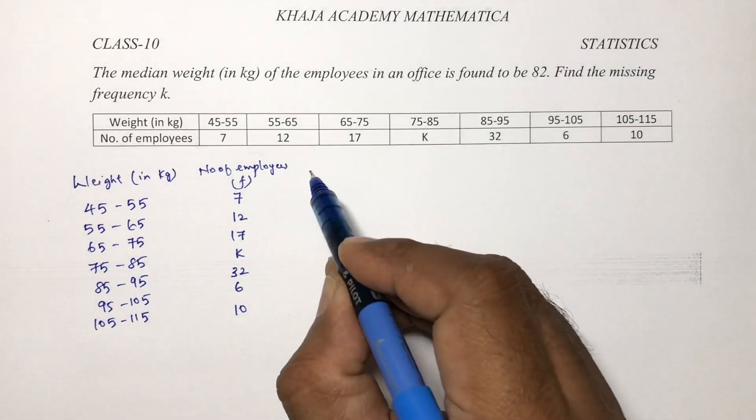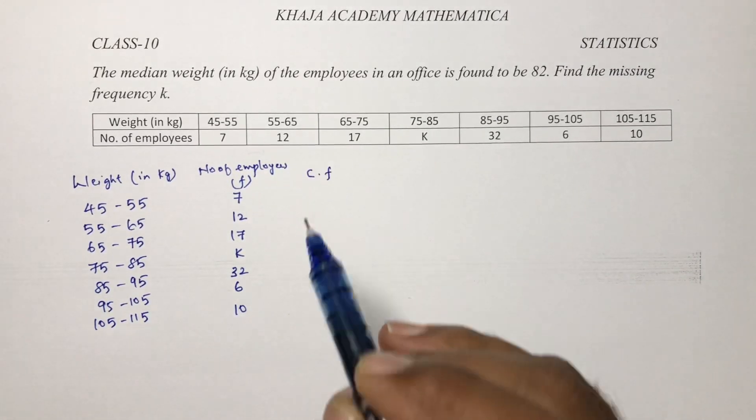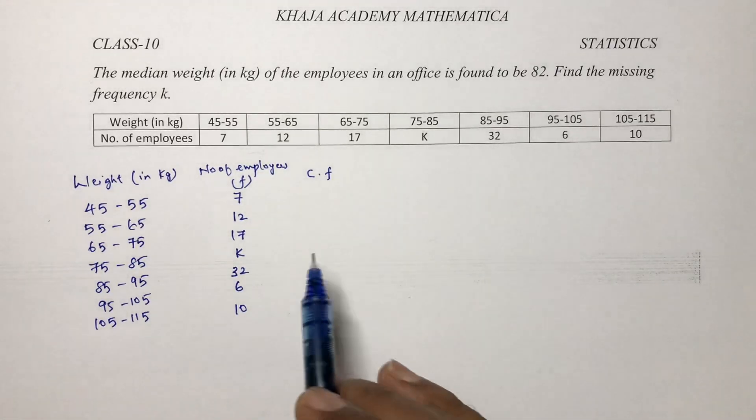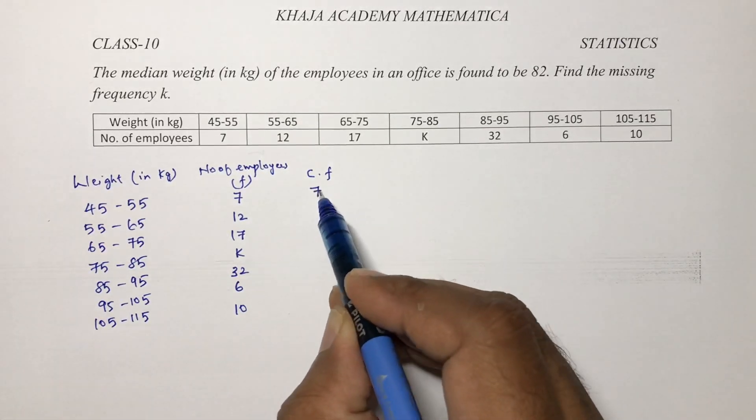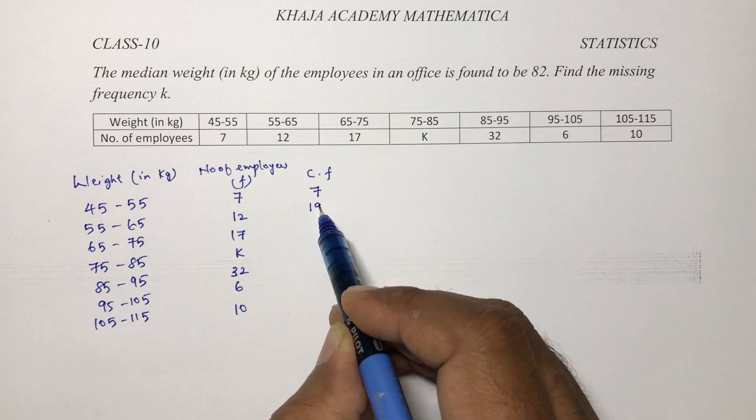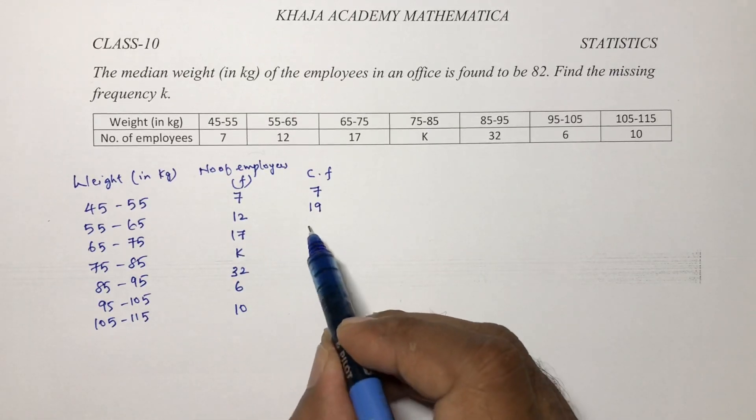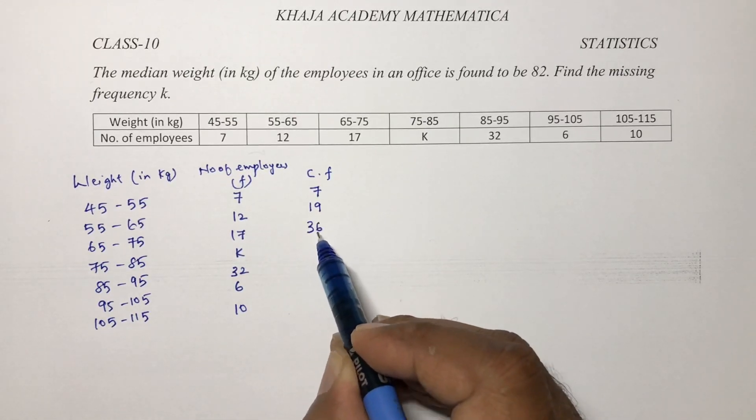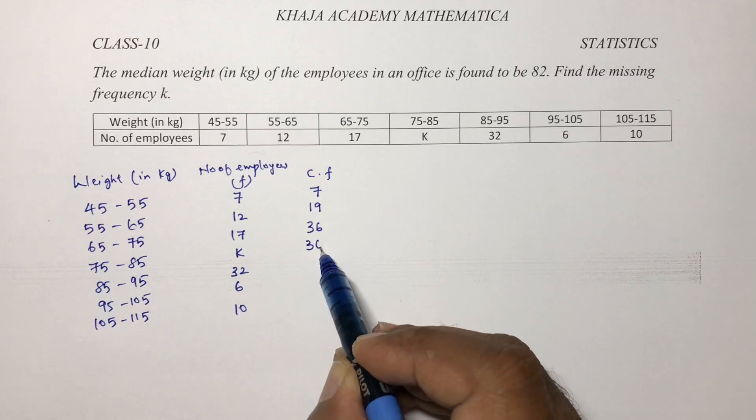Now here median, so compulsory we need to find cumulative frequency. So cumulative frequency is 7, 7 plus 12 is 19, 19 plus 17 is 36.